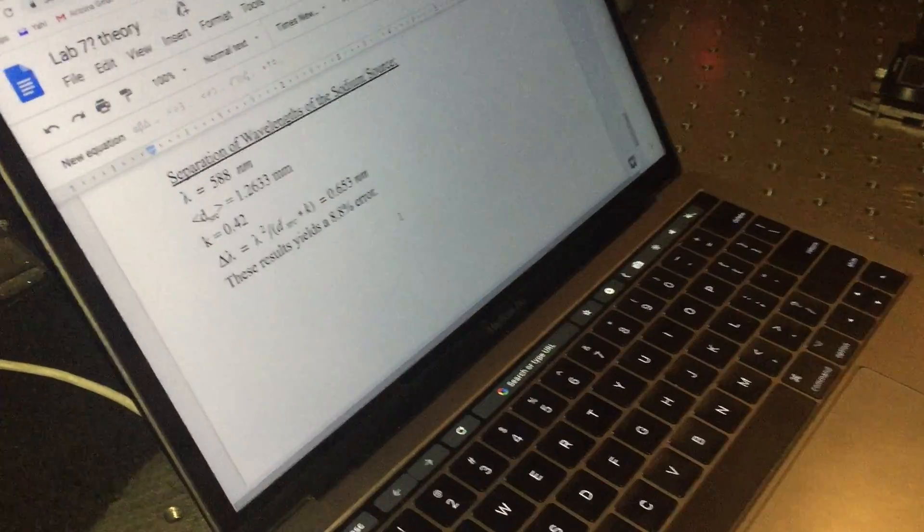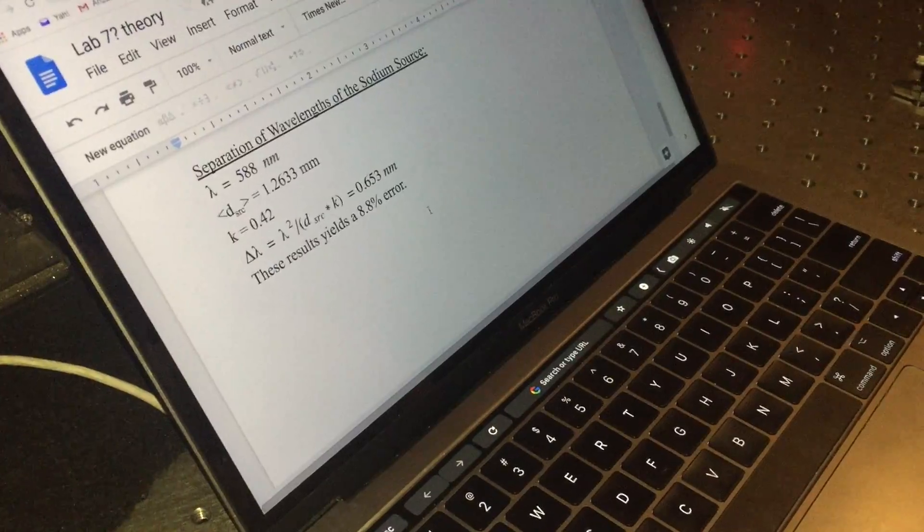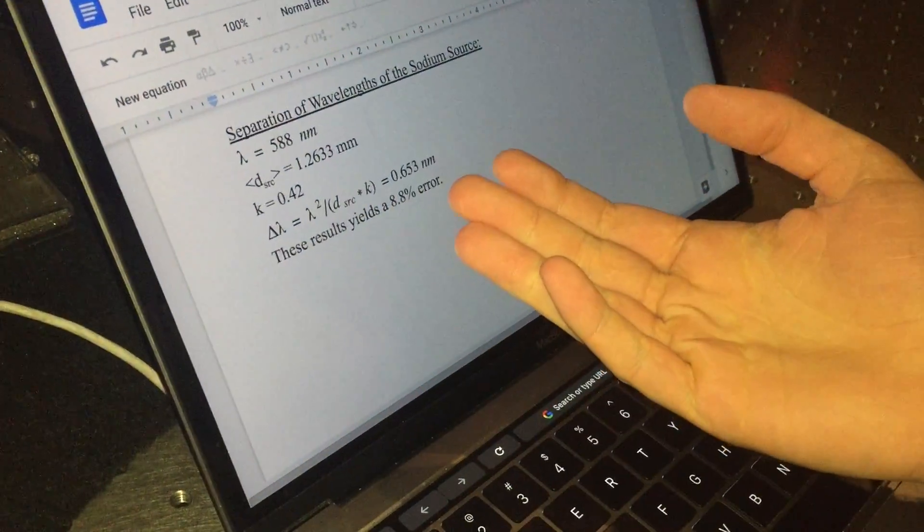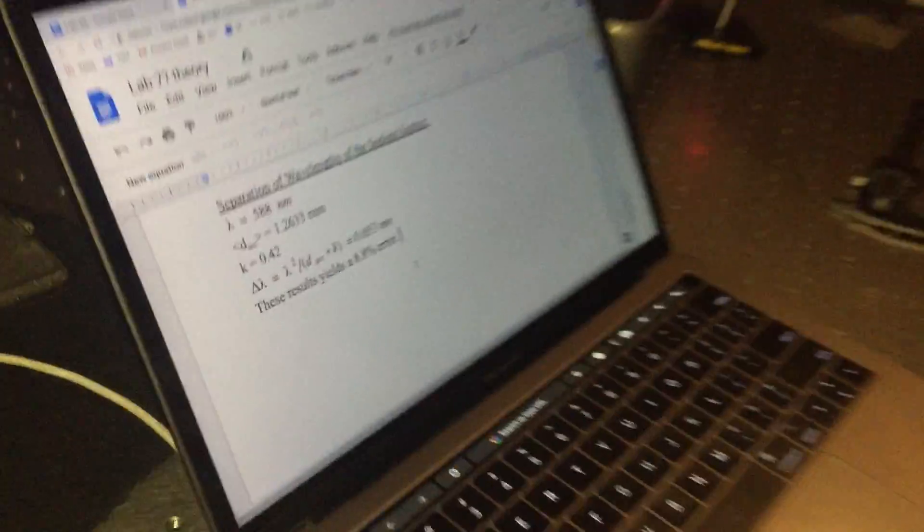We used the same K configuration factor, 0.42, and that yielded a change in delta of 0.653. We get a 8.8% error.